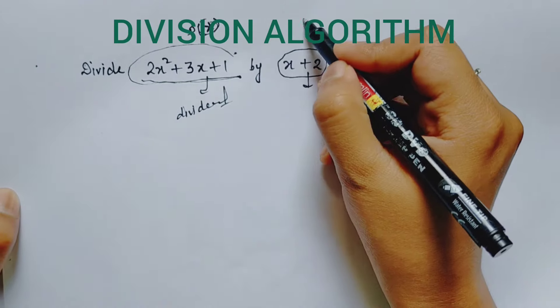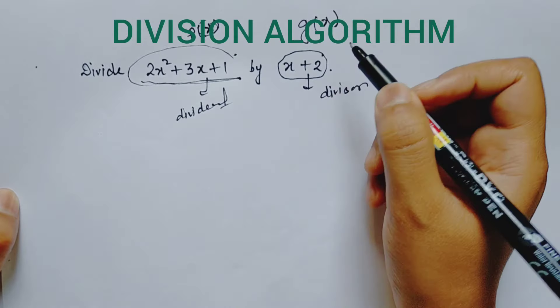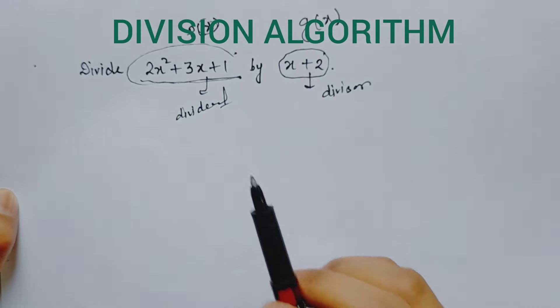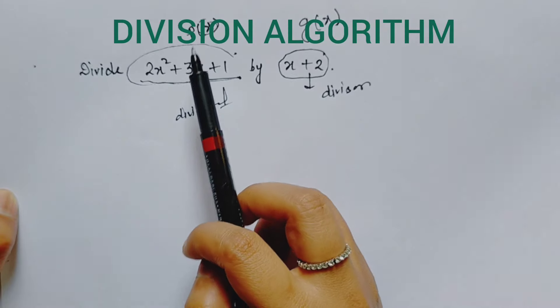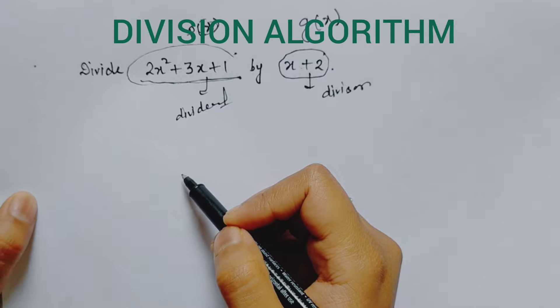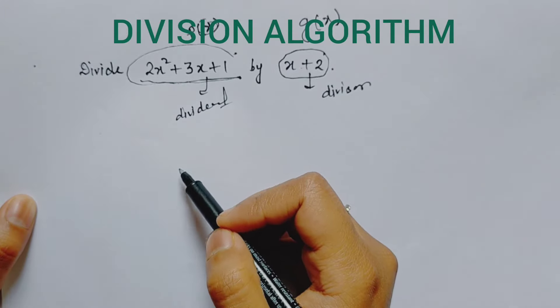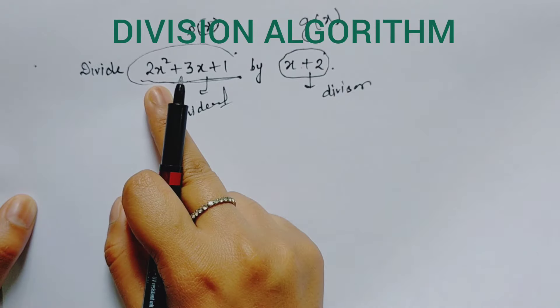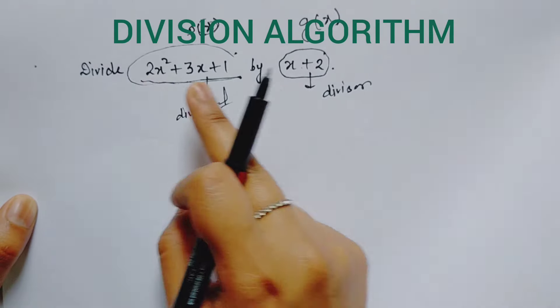We generally call the divisor g(x). This is a simple notation to represent dividend and divisor. In this video we will discuss how to divide normally. First rule: we see the degree of the dividend, which should be greater than the degree of the divisor.